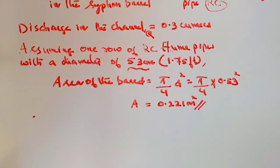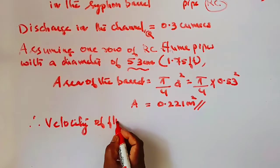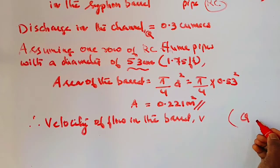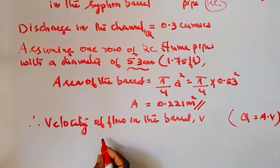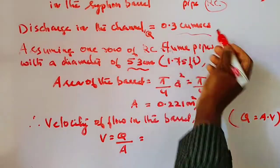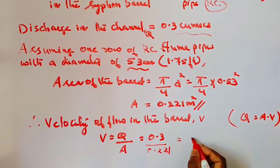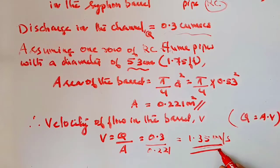We need to find the velocity using the equation Q = A × V, so V = Q / A. With discharge Q = 0.3 and area A = 0.221, the velocity of flow in the barrel is V = 1.35 meters per second, which is within the acceptable range of 2 to 3 meters per second.